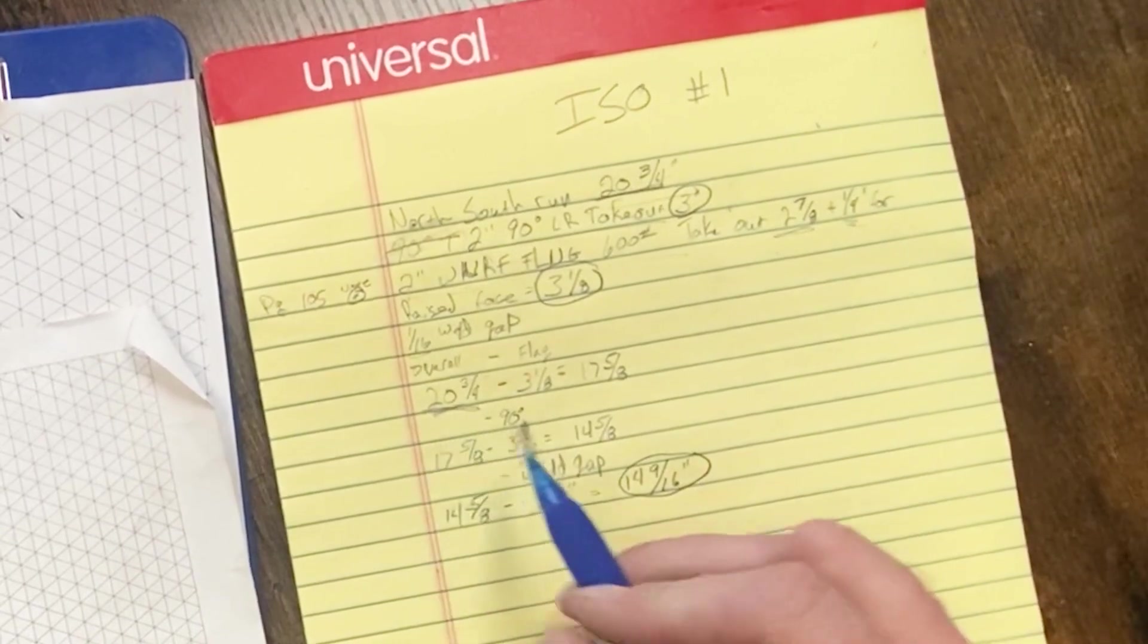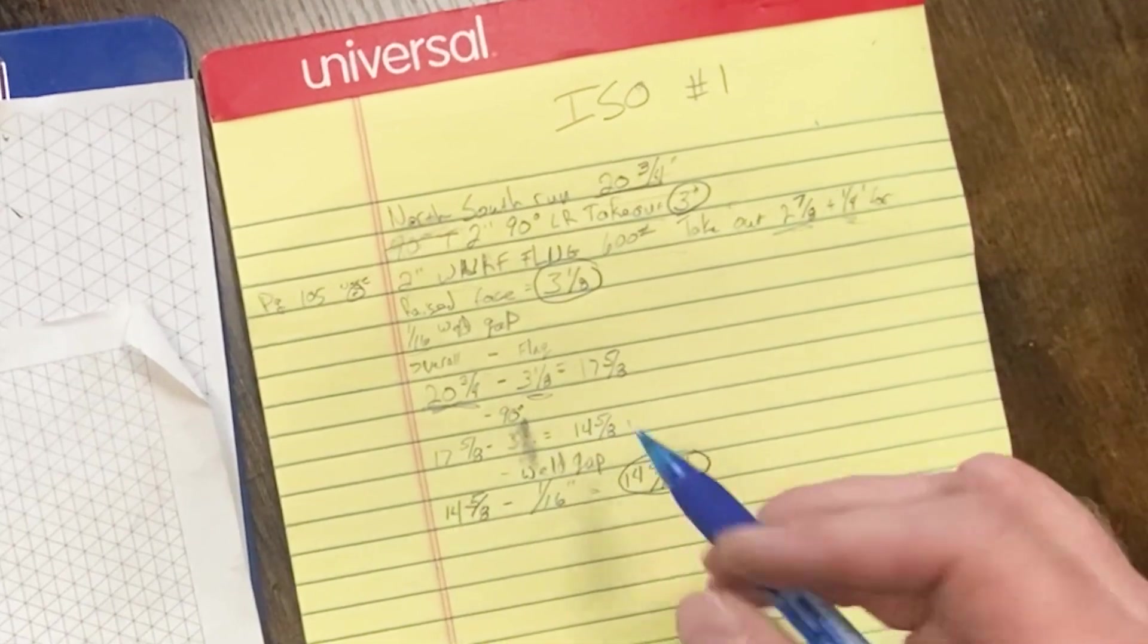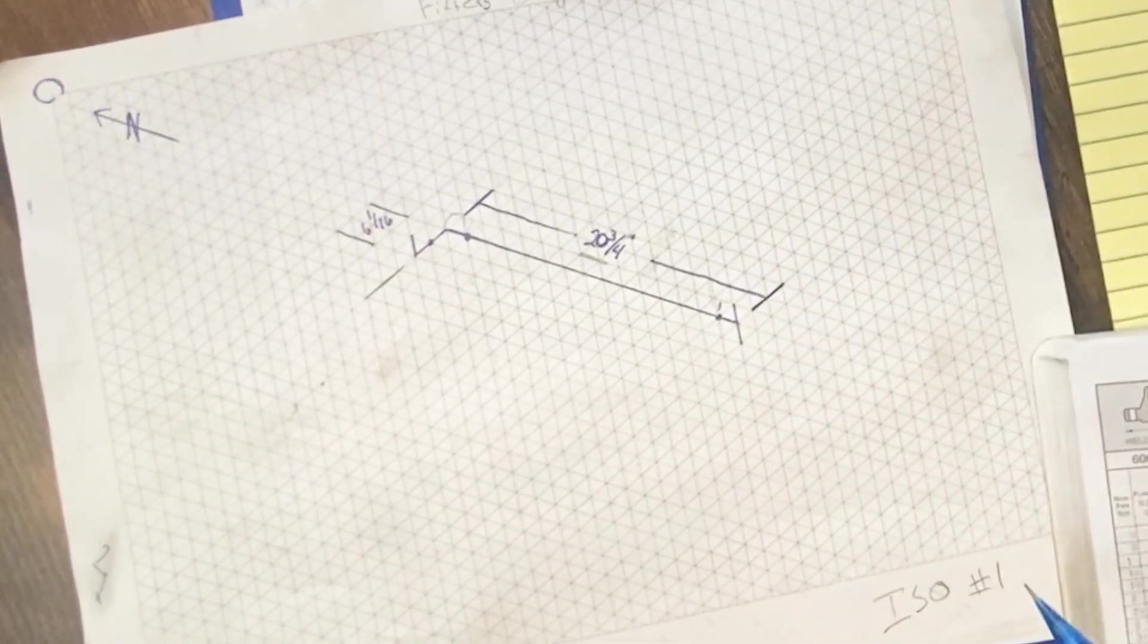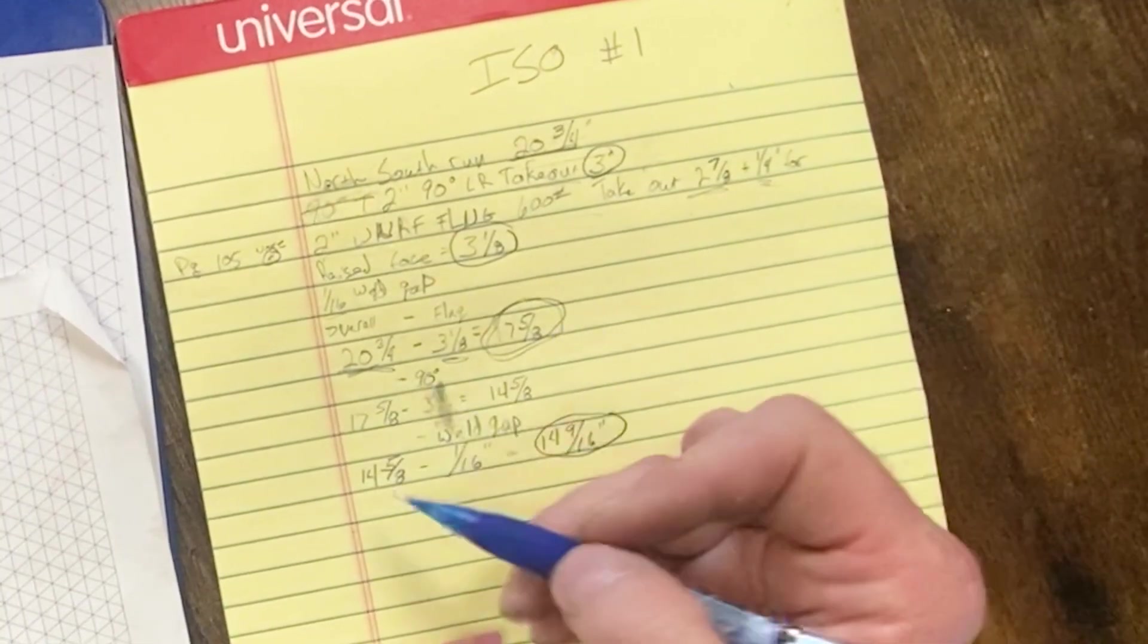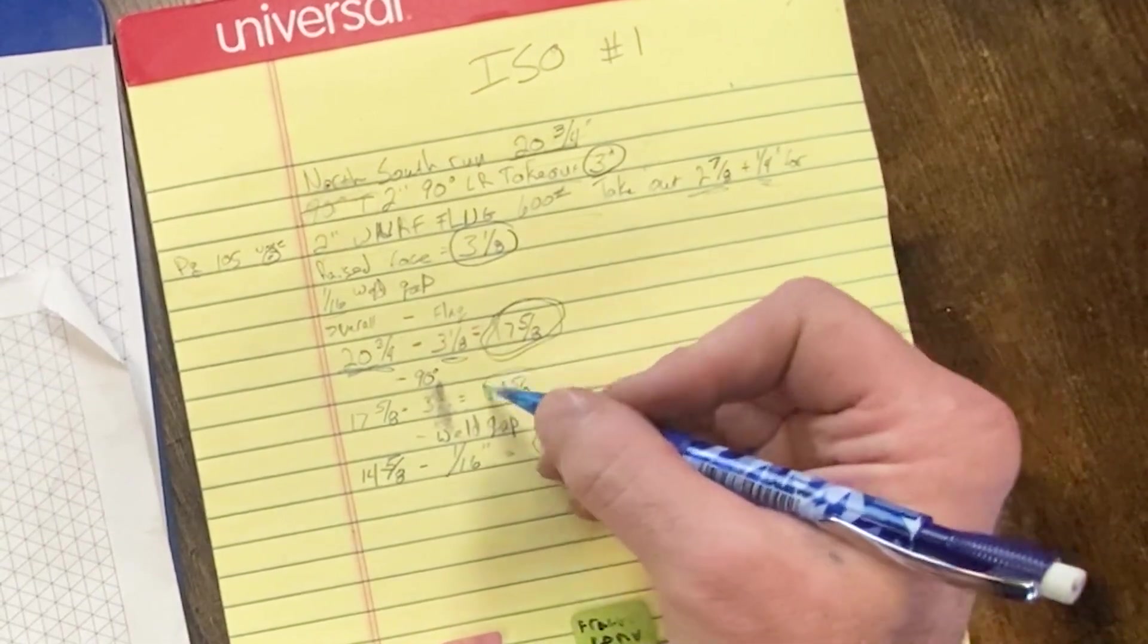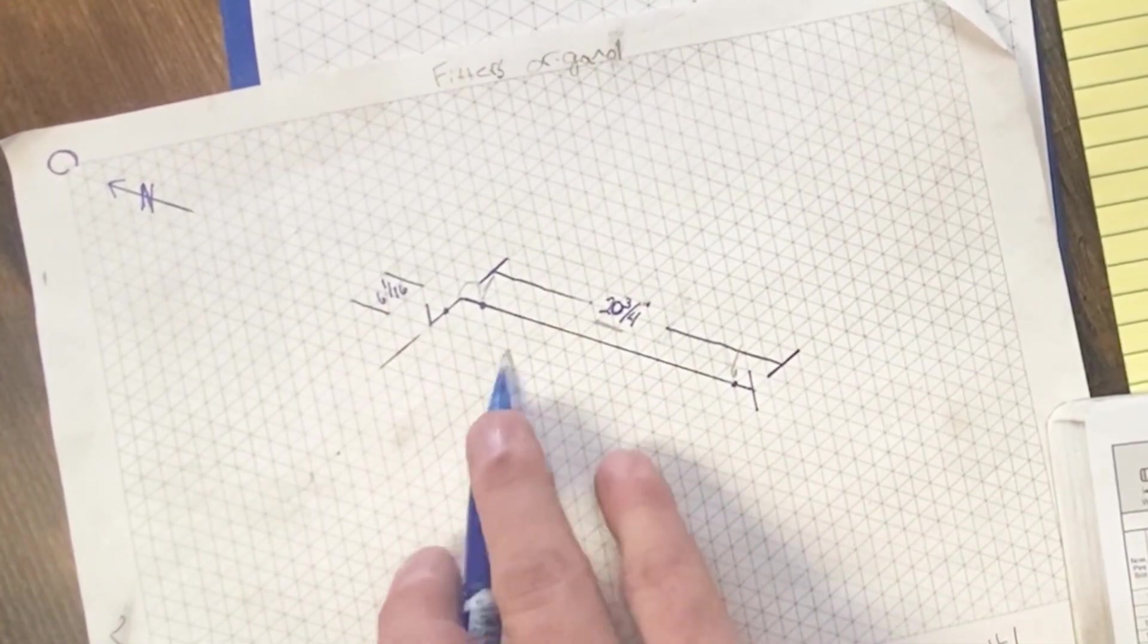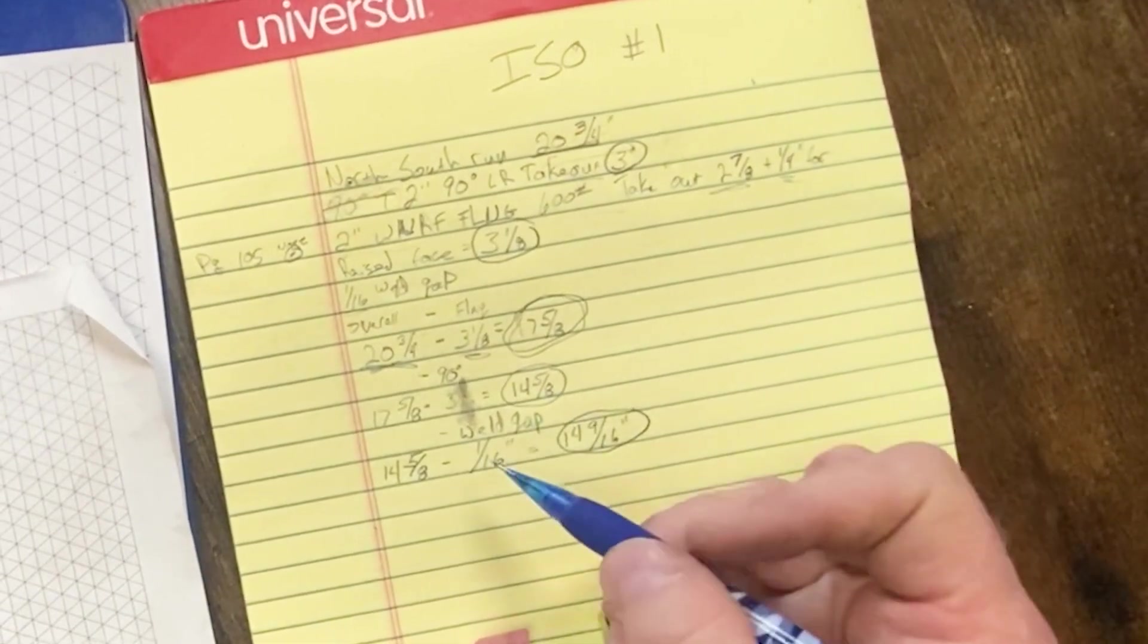So we start with our 20 and 3 quarters, minus 3 and an eighth of an inch, which is our raised face weld neck flange. That gives us 17 and 5/8ths of an inch. So we know from center 90 to the weld behind that flange is 17 and 5/8ths of an inch. Now we subtract our 90 degree elbow. So at 17 and 5/8ths, minus 3 inches, that equals 14 and 5/8ths. So we know now that piece of pipe is 14 and 5/8ths, weld to weld. But we've still got to take out our weld gap, which is generally a 16th of an inch.